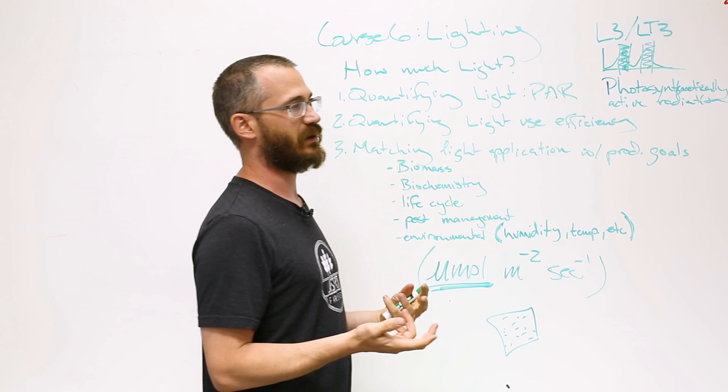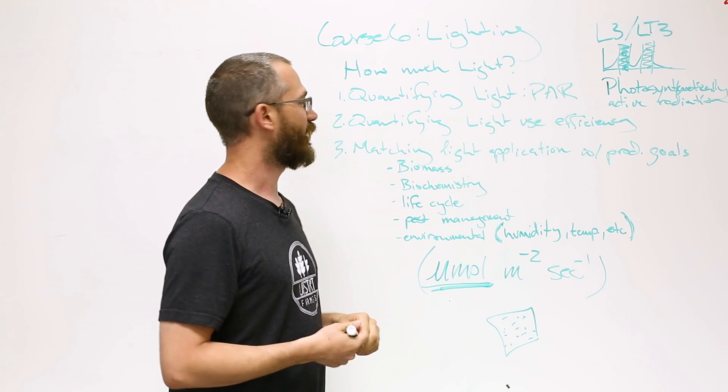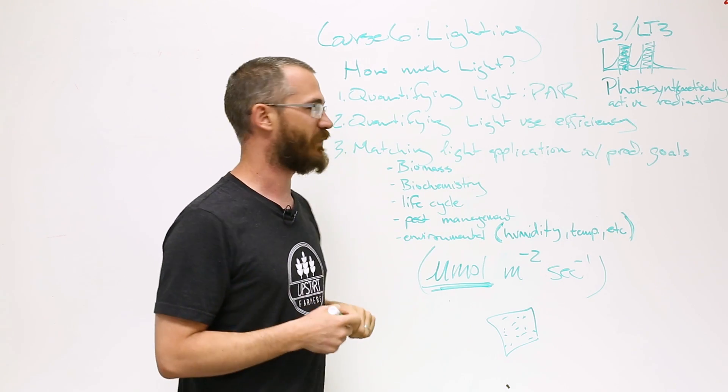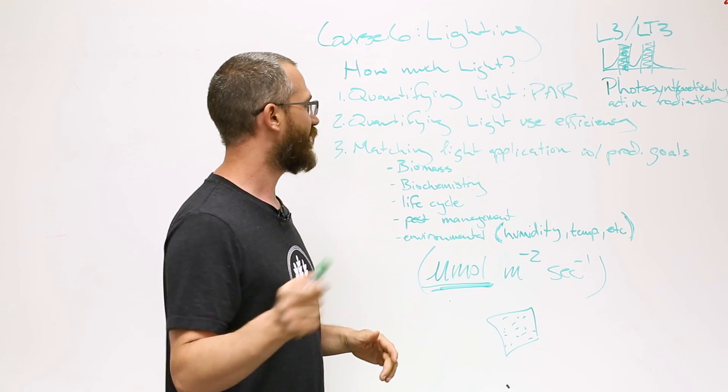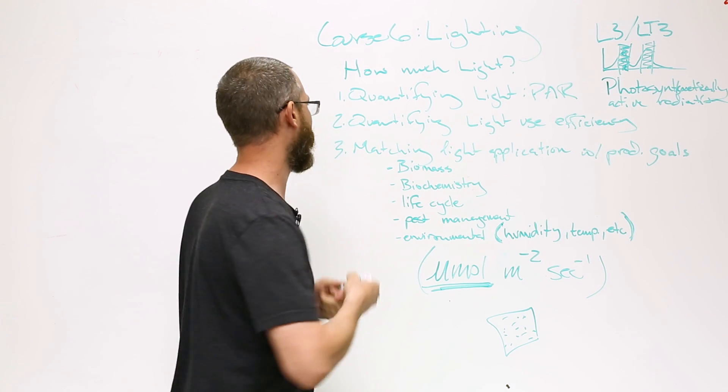Quantifying the use efficiency is part of the design process. This can be done in very technical ways, but in a controlled environment, the easiest way, though it's still kind of crude, is simply output.